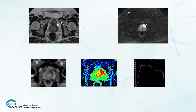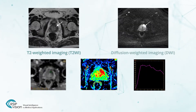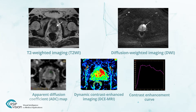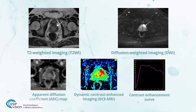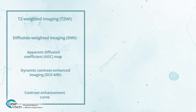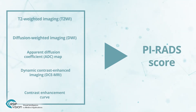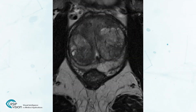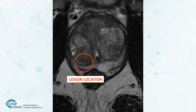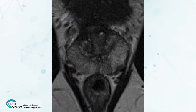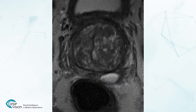The PIRAD score was developed to standardize reporting of prostatic suspicious lesions using specific characteristics and MRI sequences, by providing a numerical score. However, calculating the PIRAD score is time-consuming and highly depends on the image quality and the radiologist's experience.